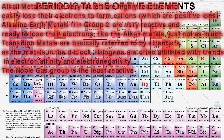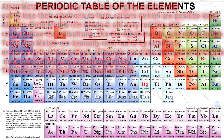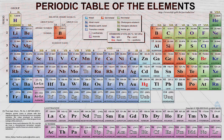Alkali metals on the very far left are highly reactive and easily lose their electrons to form cations, which are positive ions. Alkaline earth metals from group 2 are also really reactive and ready to lose their electrons like the alkali metals, just not as much. Transition metals are referred to by scientists as the metals in the D block. Halogens are often affiliated with trends in electron affinity and electronegativity. The noble gases group is the least reactive.